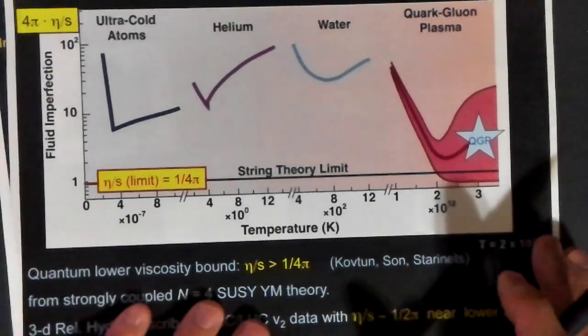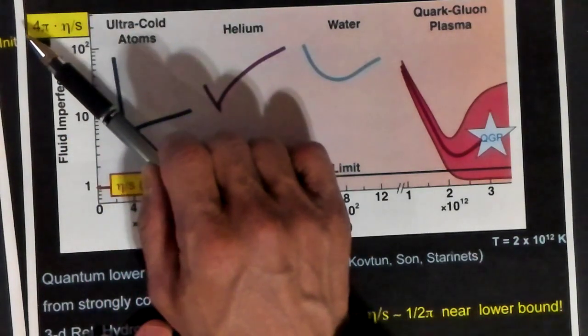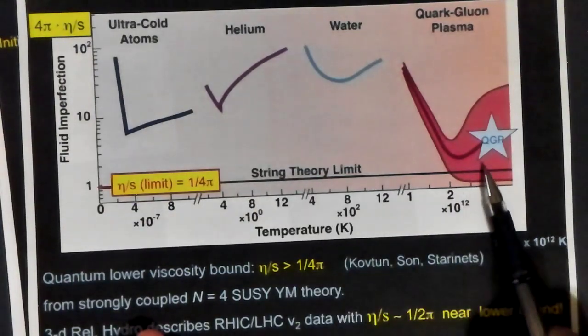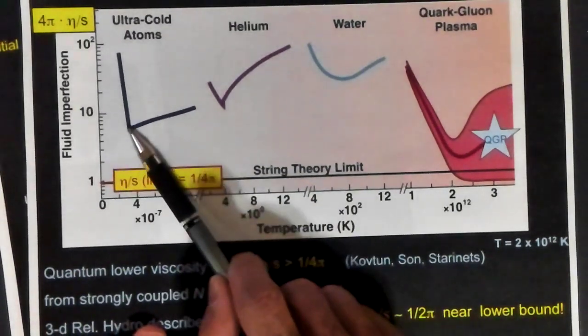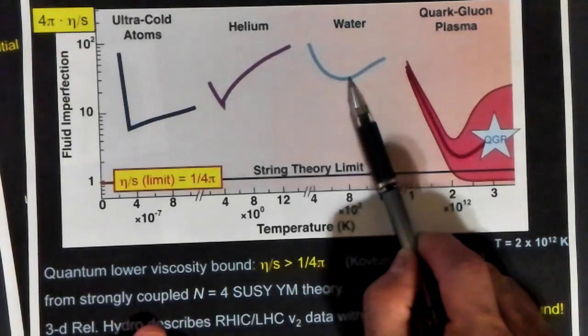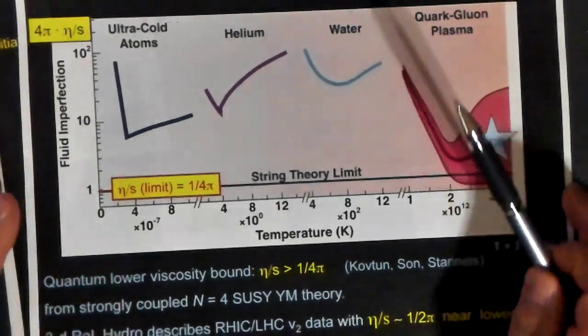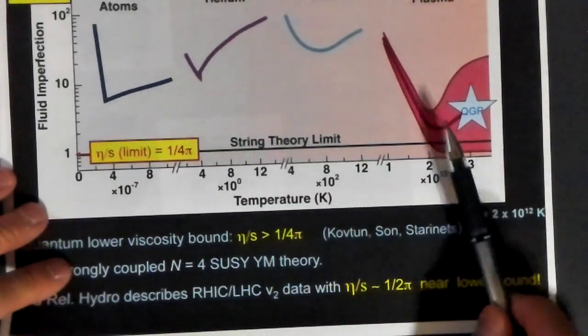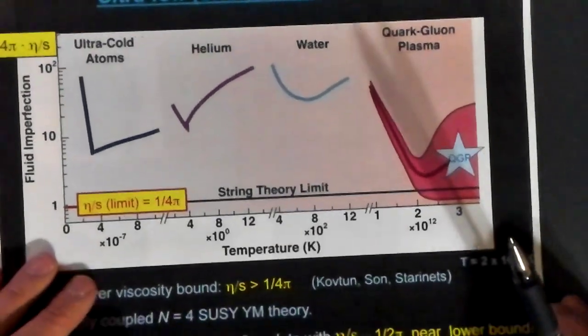You can plot what AdS-CFT, the viscosity over entropy density, times 1 over the purported lower bound, 4 pi, and you can see how it compares with the limit here, which would be 1. AdS-CFT equals 1 over 4 pi. For ultracold atoms, you get pretty low, but you get maybe like a factor of 5 times the bound. For helium, you're about a factor of 10 above. For water, you're a factor of maybe about 30 above. But for the quark-gluon plasma, it seems like you get very close to the bound, maybe even possibly going a little bit below. There's a lot of error bars. That's quite interesting. They very often say the quark-gluon plasma is making the perfect liquid. It's getting to the lowest possible viscosity that's allowed by quantum mechanics, if you believe this bound.